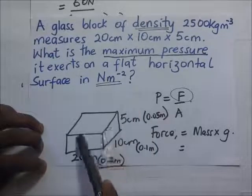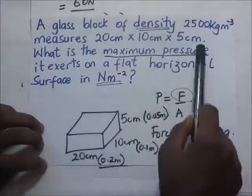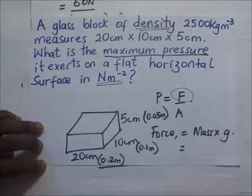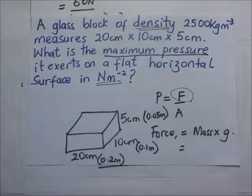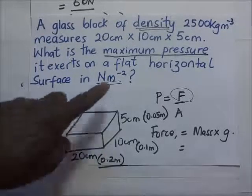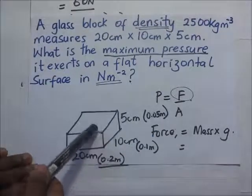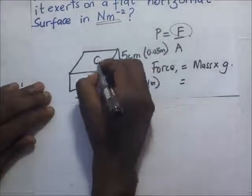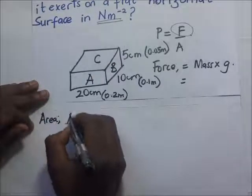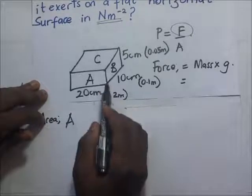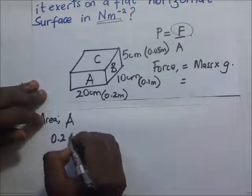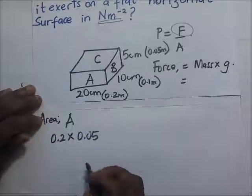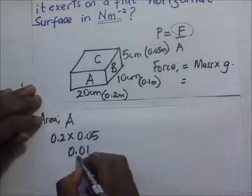Looking at all three faces of the block, the maximum pressure is achieved when the smallest area is in contact with the surface. So we need to find the smallest area. Let's label the faces A, B, and C and compute each. The area of face A is length times width: 0.2 times 0.05, which gives 0.01 meters squared.